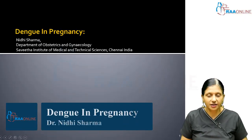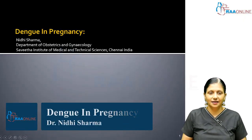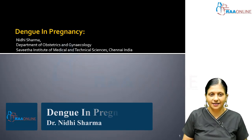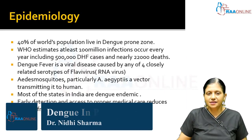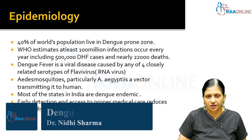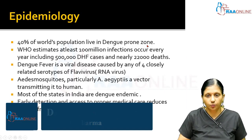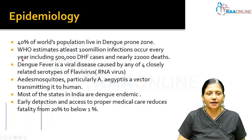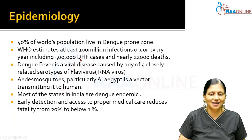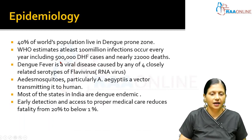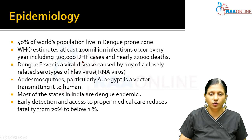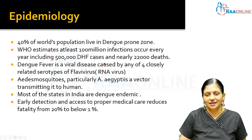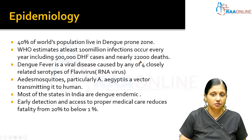Welcome to RAA online. Today's topic is Dengue in Pregnancy. 40% of the world's population live in the Dengue prone zone and WHO estimates that at least 100 million infections occur every year, including 5 lakh Dengue hemorrhagic fever cases and nearly 22,000 deaths.